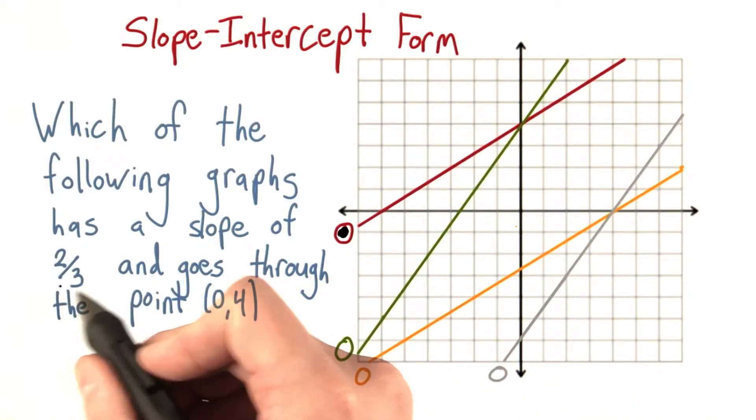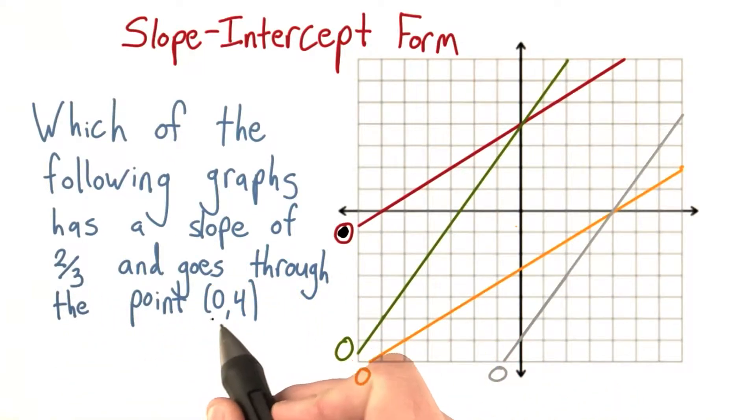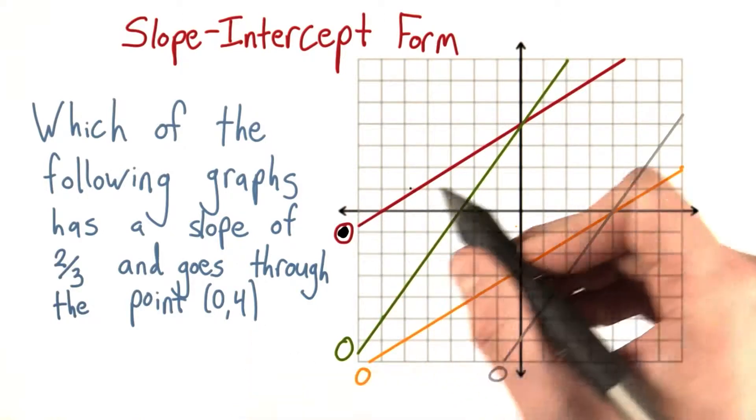So in this last question, you used the slope, 2 thirds, and this one point, (0, 4), to graph this line.